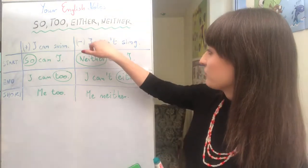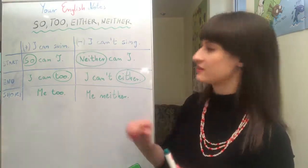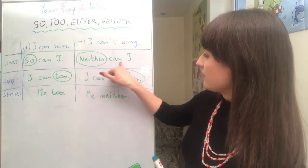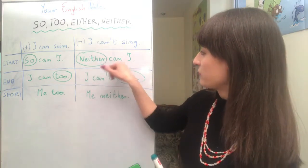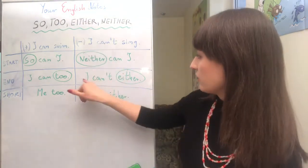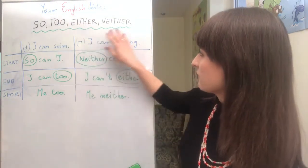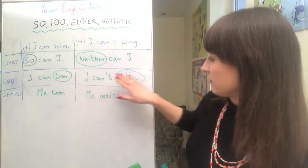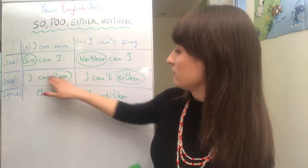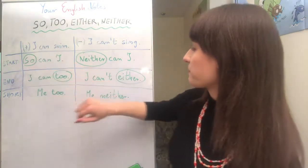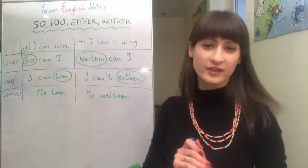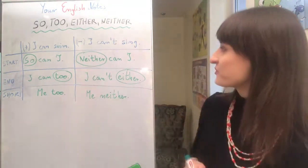Just one more thing — look, we have a negative sentence here, and when you say "neither can I," the form of "can" is positive. So remember about that. Here with "either" you just repeat: "I can't sing" — "I can't either." But with "neither," just be careful: "I can't sing" — "neither can I."